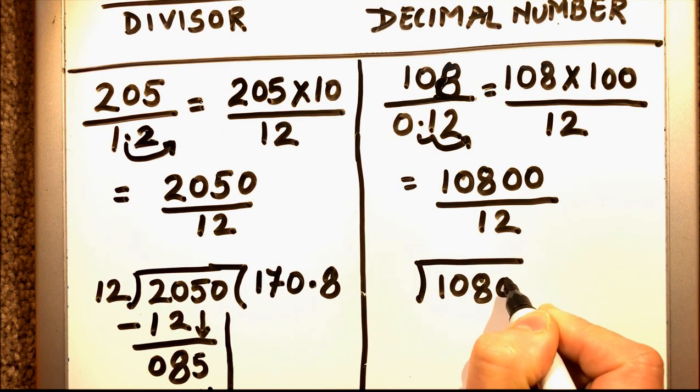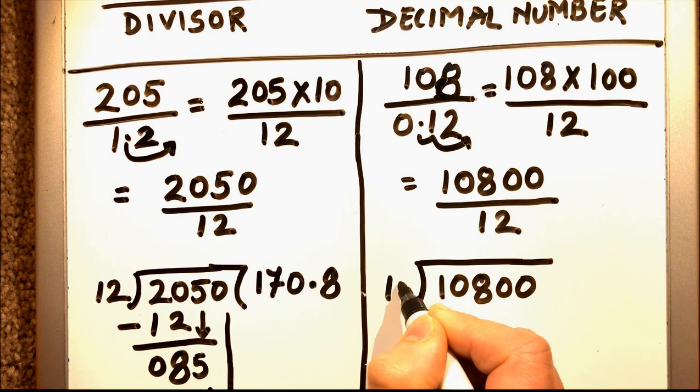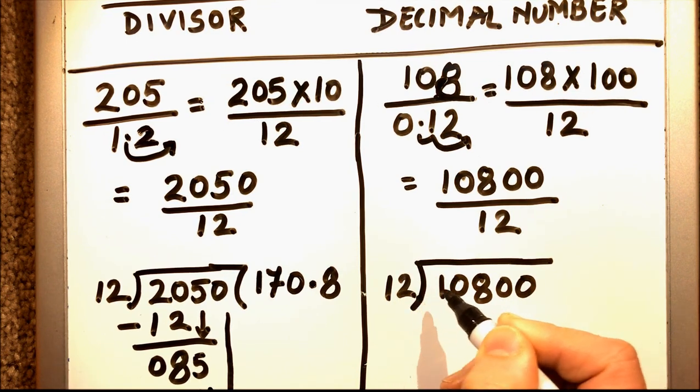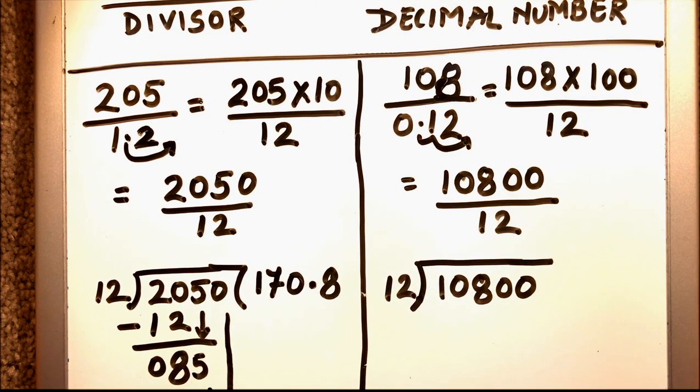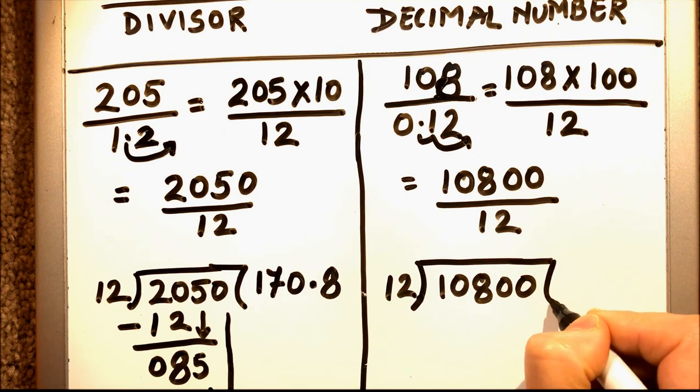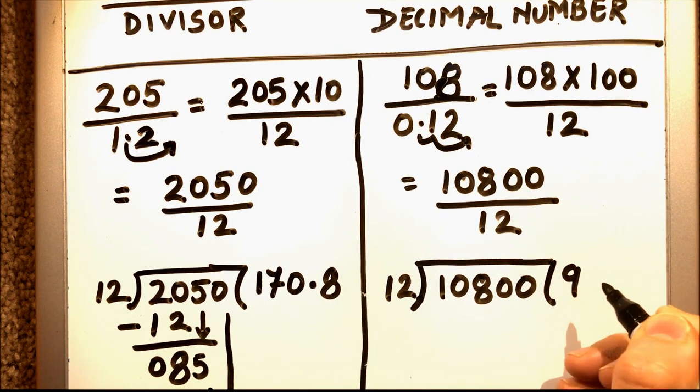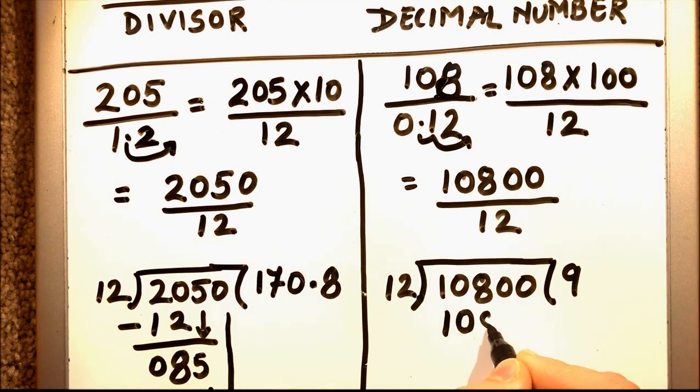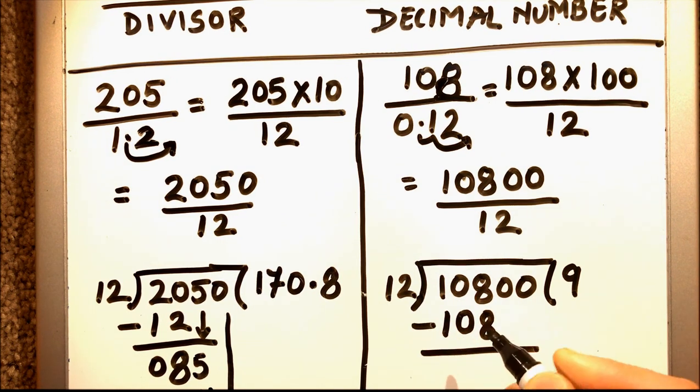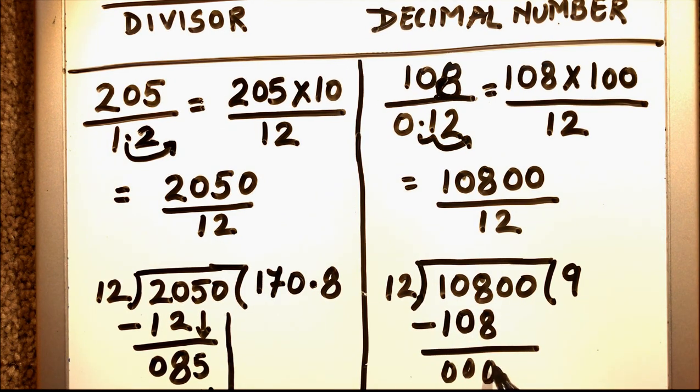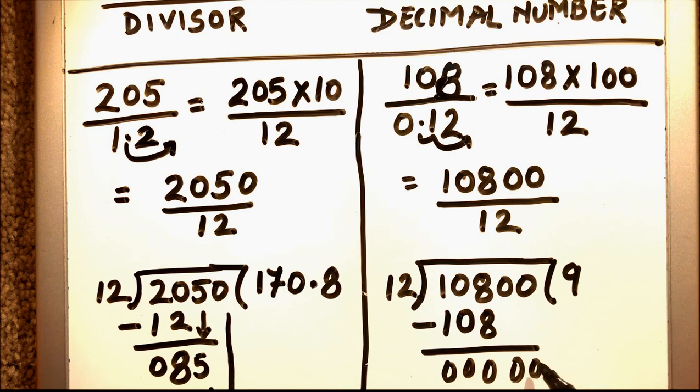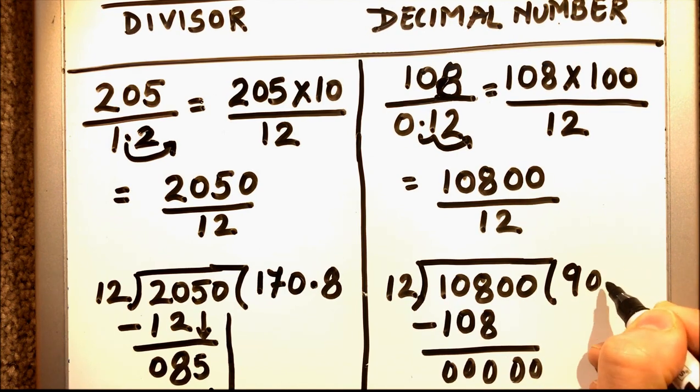So we'll do this. 12 times 9 is 108. So we'll do it like this: 0, 0, 0, and then 0, 0. So we'll add two zeros here.